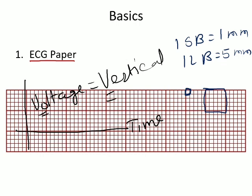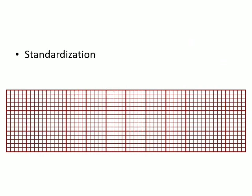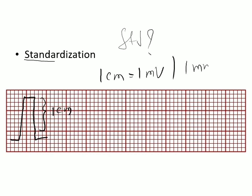An ECG is often described as a standard 12-lead ECG. The word 'standard' refers to a rectangle seen at the beginning or end of the ECG — its height is 1 cm, signifying that 1 cm equals 1 millivolt, or equivalently 1 mm equals 0.1 millivolt. That is the meaning of standardization, and this is commonly asked in MBBS practical examinations.